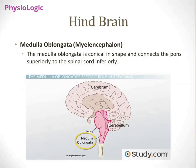The other name for medulla oblongata is myelencephalon. It is conical in shape and connects the pons superiorly to the spinal cord inferiorly. It is the structure lying between the pons and the spinal cord. It is the last structure of the brain, terminating at the foramen magnum. Below the foramen magnum is the spinal cord, so the last brain structure above the foramen magnum is the medulla oblongata.